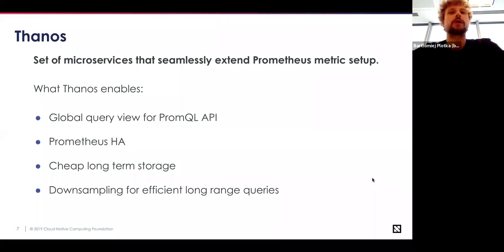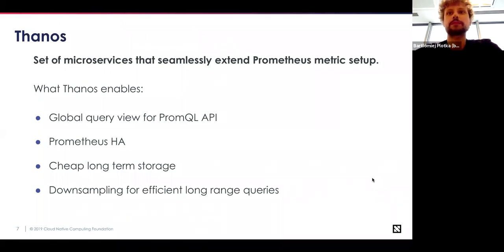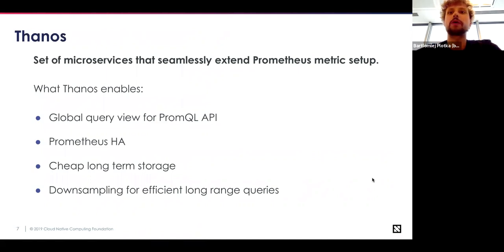Thanos is a monitoring system — a set of cloud-native components that you can install on top of Prometheus, which is a graduated CNCF project. You can easily add Thanos to your Prometheus servers that are continuously collecting metrics, potentially from multiple Kubernetes clusters. Thanks to that setup, you can solve four main drawbacks of running Prometheus at scale: querying metrics from a single place (a global view), making Prometheus highly available, allowing zero-loss rolling restarts, and supporting cheap, easy-to-operate unlimited metrics retention with built-in downsampling.